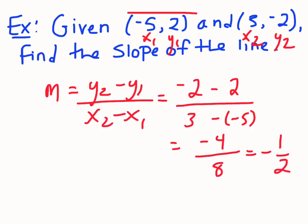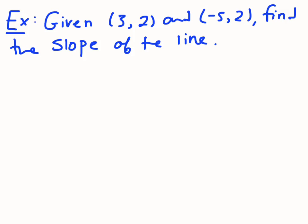All right, let's try one more. Given the two points 3, 2 and negative 5, 2, find the slope of the line. So again, x1, y1, x2, y2. Sometimes you might want to pick what way you want to subtract them, so you might switch the labeling. But if you're comfortable with subtracting a negative, it really doesn't make a difference.